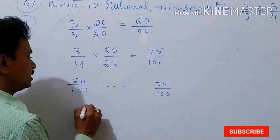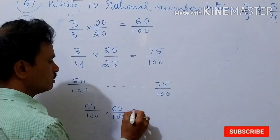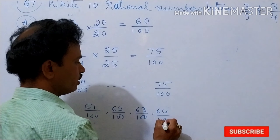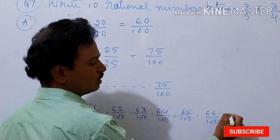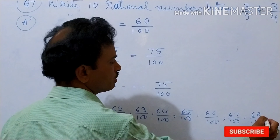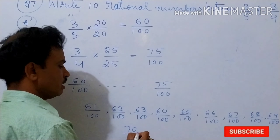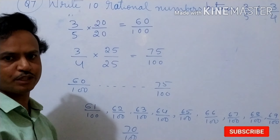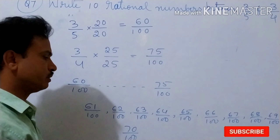Now we should find 10 rational numbers in between 60 by 100 and 75 by 100. We take: 61 by 100, 62 by 100, 63 by 100, 64 by 100, 65 by 100, 66 by 100, 67 by 100, 68 by 100, 69 by 100, then 70 by 100. You can also take 71, 72, 73, or 74 — any 10 rational numbers between these two.